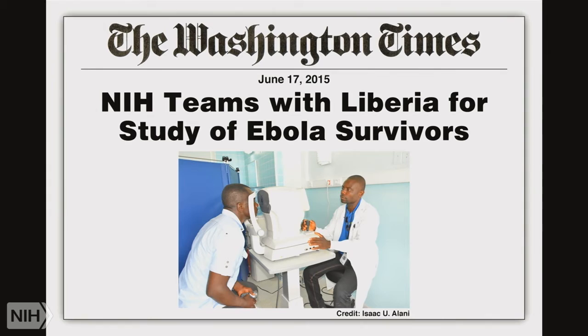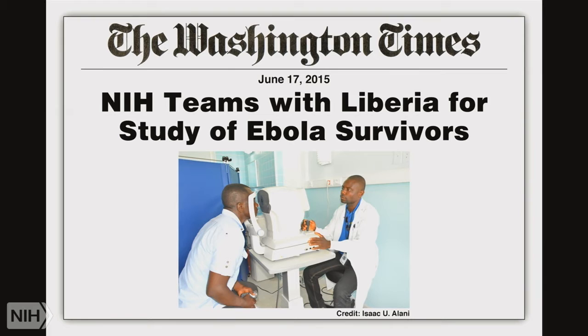We also have a survivor study — I may be going to Liberia on Saturday with Cliff Lane to check on it, as we're finding some very interesting long-range complications in Ebola survivors. And now Zika virus is occupying a lot of my time. This is another surprise, like chikungunya, like dengue. Formerly, Zika was a disease of Asia and Africa — that's a recurring theme.